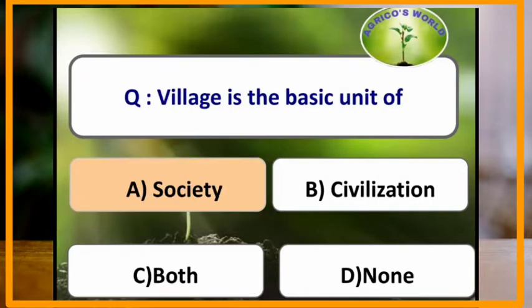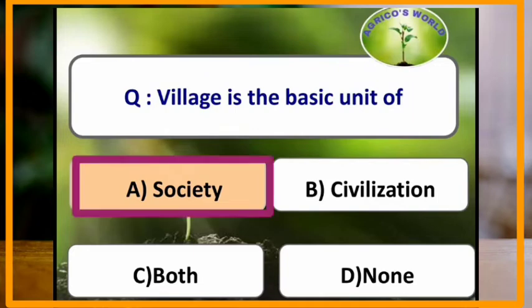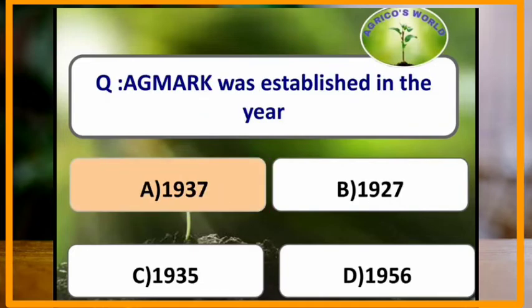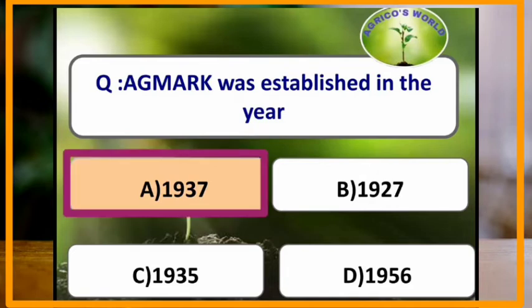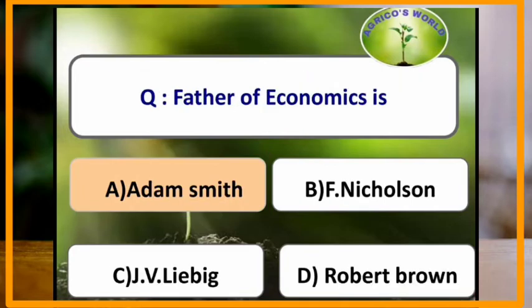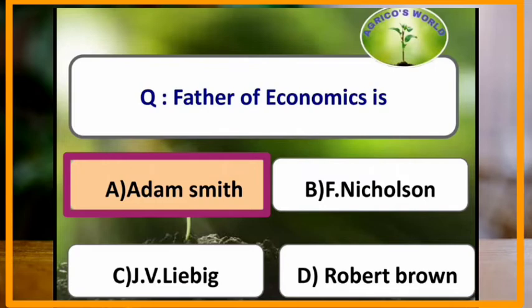Village is the basic unit of which of the following? Village is the basic unit of society. AGMARK was established in which year? AGMARK was established in the year 1937. Father of economics is Adam Smith.